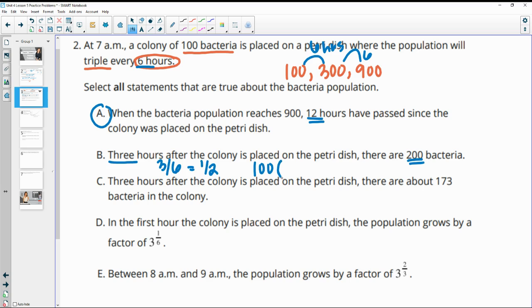So to figure this out, we would do 100 times 3 to the one half power, which is also the square root of 3. And when you do that, you get about 173.